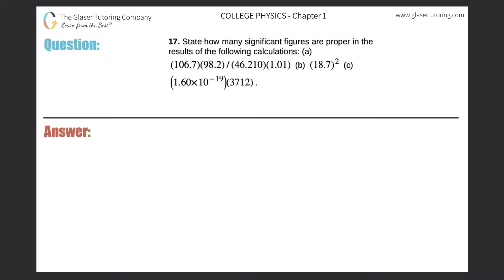Number 17, state how many significant figures are proper in the results of the following calculations. Letter A, so 106.7 times 98.2 divided by 46.210 times 101, and 1.01.